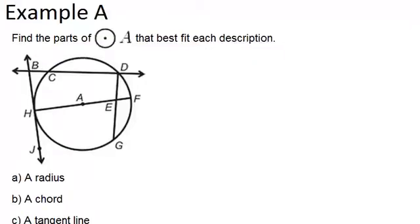So starting with part A, it says, find a radius. So a radius is a segment that connects the center of the circle to the edge of the circle. So one example of a radius would be this segment AF. You could also do segment AH. So a radius would be AF.